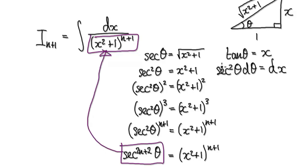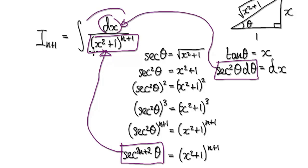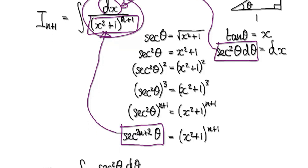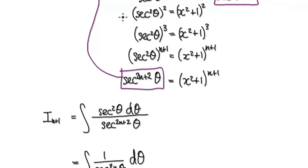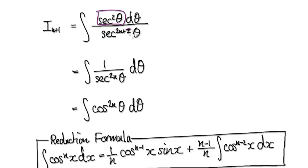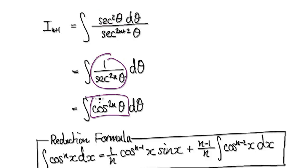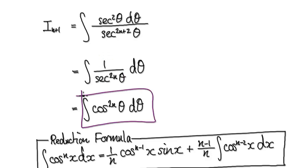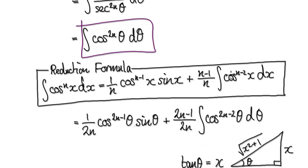We can put this block into the dx, so the whole thing will then become this. Now it's just a matter of tidying this up — the squared terms cancel out, giving you this. Tidying up further, that would then be cosine. And now we know how to integrate cosine to the power of anything by using the reduction formula. This is the reduction formula for cosine to the power of n.